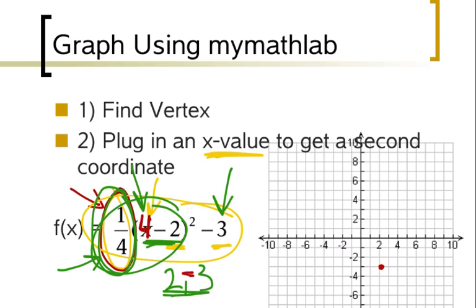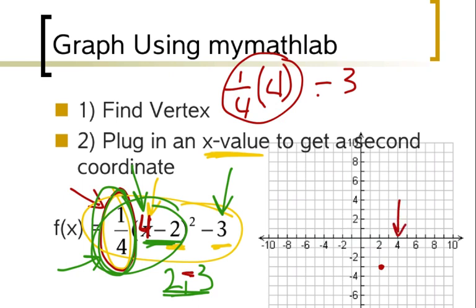Well, if I put in a 4 right here, what will happen is I'll have 4 minus 2 squared. 4 minus 2 is 2 squared which is 4. So really I have 1 fourth times the 4 minus 3. So now what happened was, I'm over at 4, I plugged it in, 4 minus 2 is 2 squared is 4, and then if I work this out, these are going to cancel and I'll end up with 1 minus 3, 1 minus 3 is equal to negative 2.